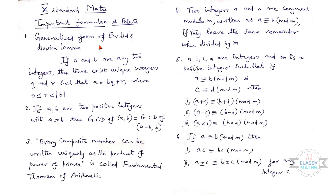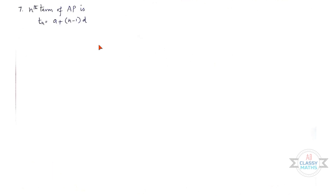Sixth point: If a ≡ b (mod m), then ac ≡ bc (mod m) and a ± c ≡ b ± c (mod m) for any integer c.